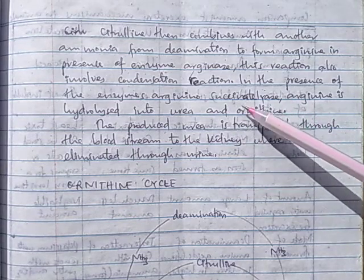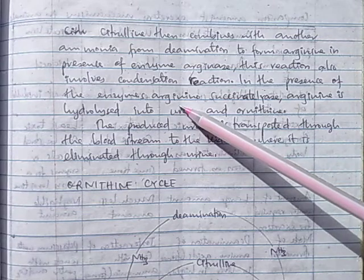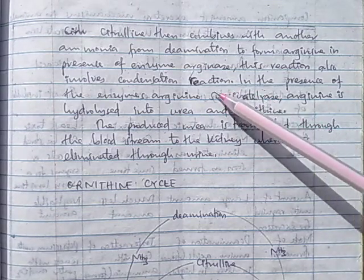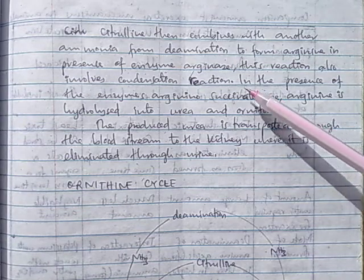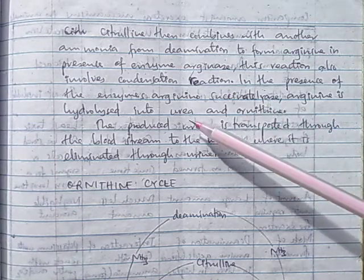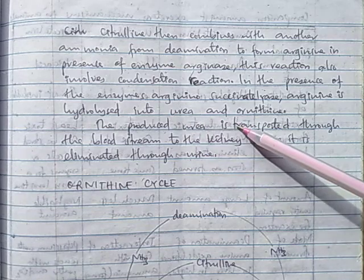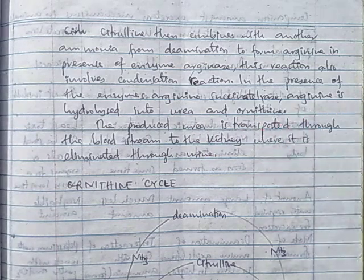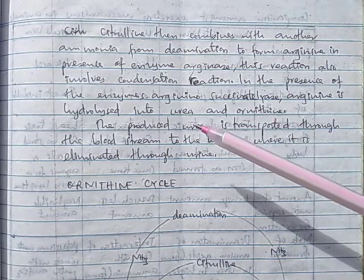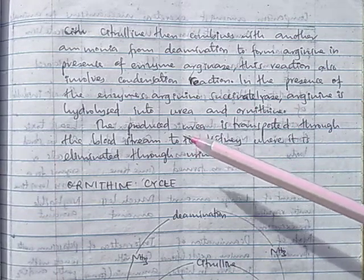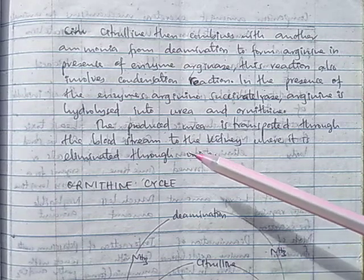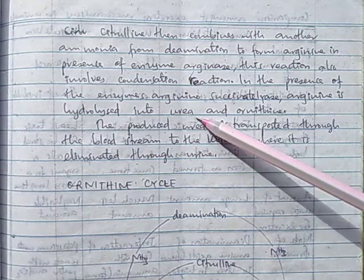Step number three: In the presence of the enzyme arginine succinylase, arginine is hydrolyzed into urea and ornithine. In step three, arginine is hydrolyzed, we add water. Remember we removed two water molecules, we added one water in step three. So it's hydrolyzed into urea and ornithine.